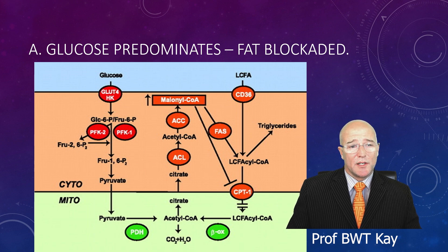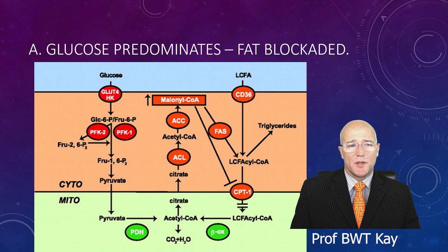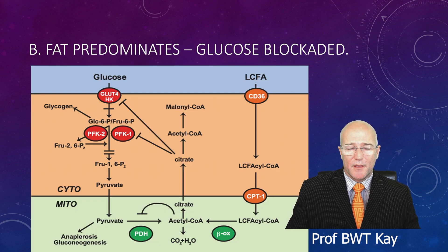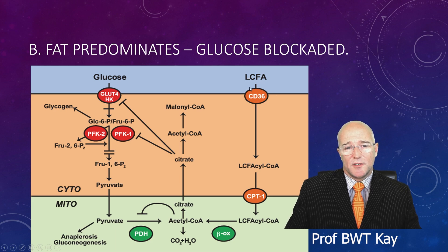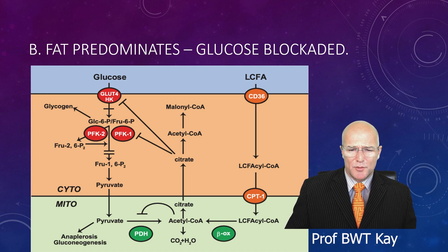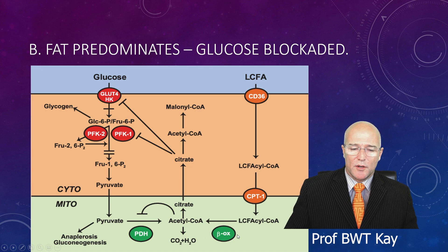Now let's move to situation B, where fat predominates and glucose is blockaded. If you have a large amount of fat and a lower amount of glucose in the bloodstream, the CD36 transporter will move the long-chain fatty acids into the cell. They will be transmuted into long-chain fatty acyl coenzyme A units, which will then activate the CPT1 transporter — which was blockaded by glucose previously — and that will move the long-chain fatty acyl coenzyme A units into the mitochondria, where beta-oxidation will transmute them into acetyl coenzyme A.